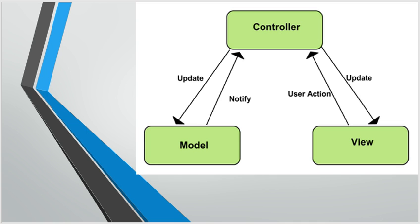If you click delete, it will prompt you with an alert box asking whether you want to delete that specific student. If you hit delete, the controller talks to the database, deletes that row, and updates the model accordingly. If the model is a list of students, that specific entity gets removed and the change is reflected in the view.